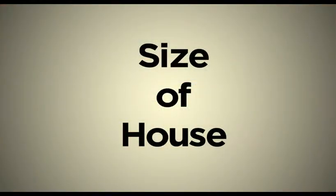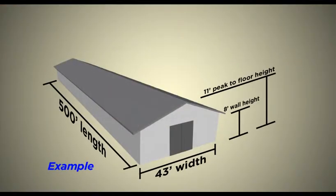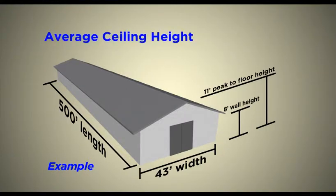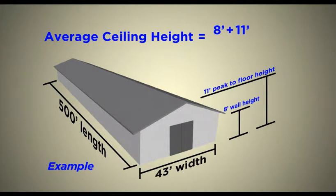To get things started, let's calculate the size of your poultry house. We need to calculate the average ceiling height. To do this, we will take the wall height, 8 feet tall, and add it to the height of the ceiling at its peak, 11 feet tall. Then we will divide by 2. That gives us 9.5 feet as our average ceiling height.